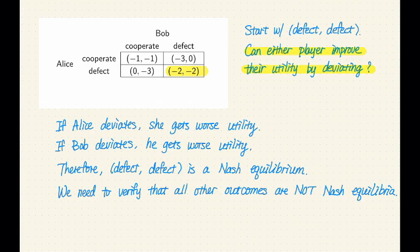So for defect and defect, what happens? Well, if Alice chooses to deviate, then she will get a utility of minus 3 instead of minus 2. So she gets worse utility if she deviates. What about Bob? Well, if Bob wants to deviate, he gets a utility of minus 3 instead of minus 2. So Bob is worse off as well.